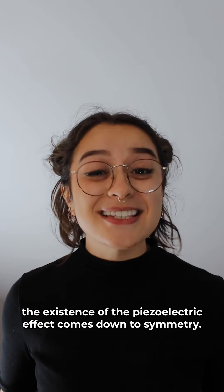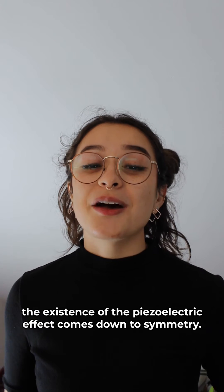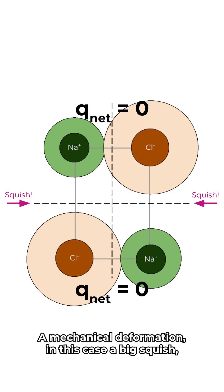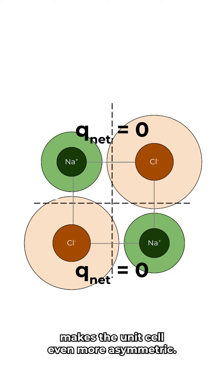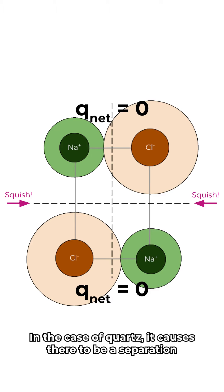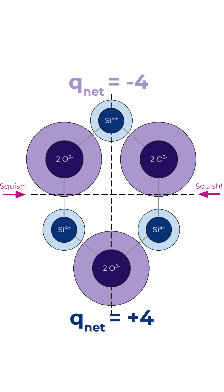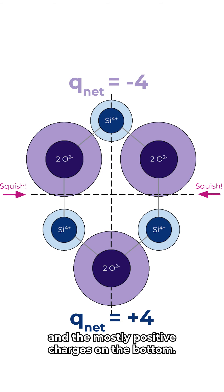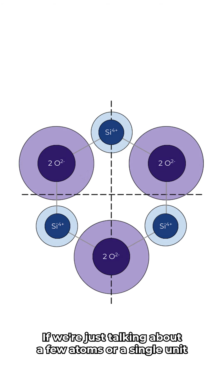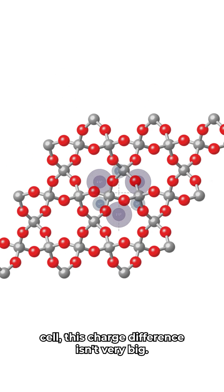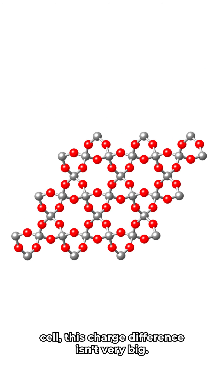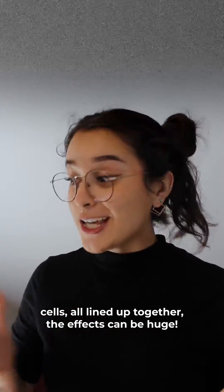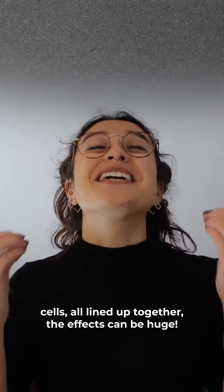But at the end of the day, the existence of the piezoelectric effect comes down to symmetry. A mechanical deformation — a big squish — makes the unit cell even more asymmetric. In the case of quartz, it causes a separation between the mostly negative charges on top and the mostly positive charges on the bottom. If we're just talking about a few atoms or a single unit cell, this charge difference isn't very big. But when you get thousands and millions of unit cells all lined up together, the effects can be huge!